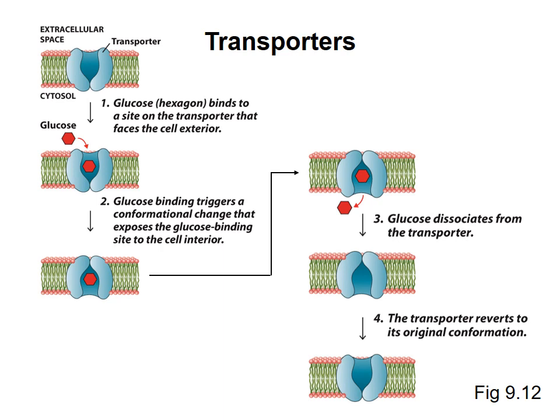One key point is that the transporter is specific for glucose and won't transport other molecules. Another key point is that the transporter changes its shape quite a bit during the transport cycle, alternating between a state in which the binding site faces the outside of the cell and one in which the binding site faces the inside of the cell.